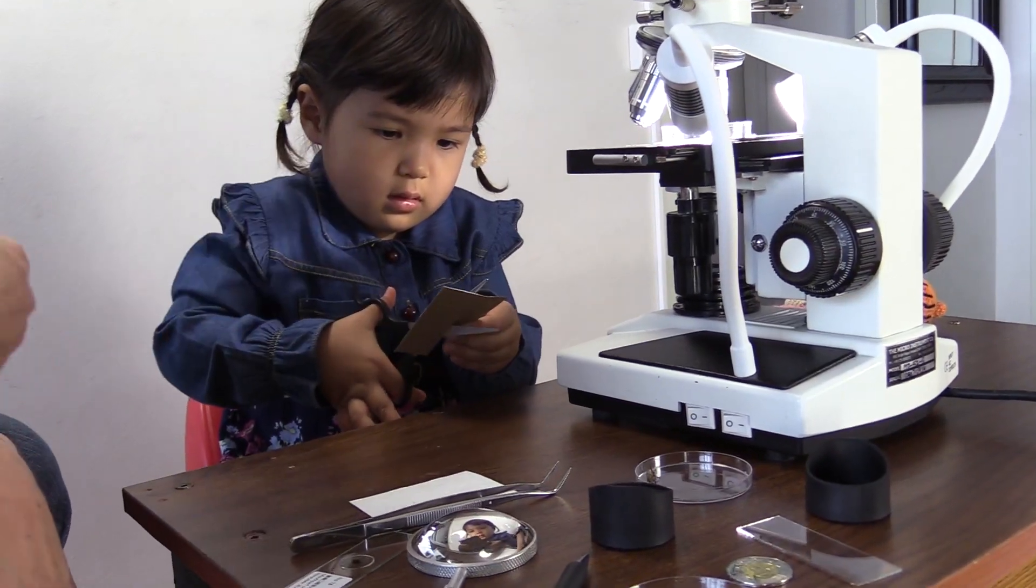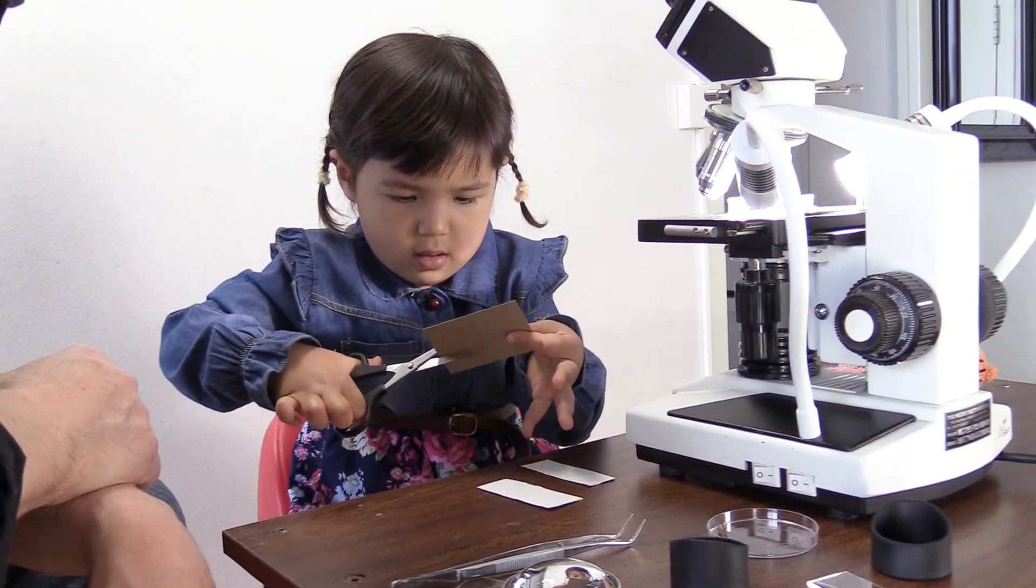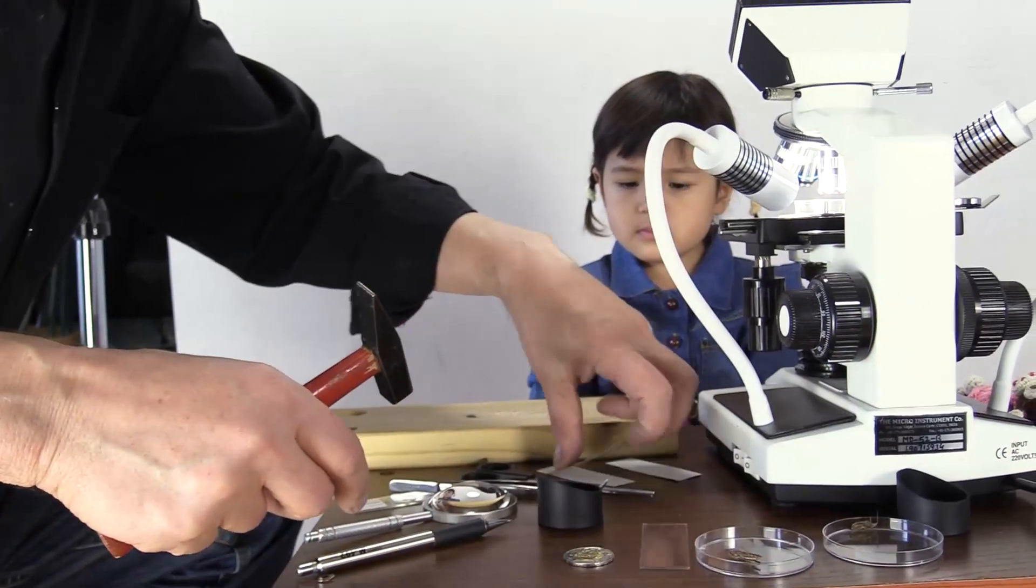Sketch several rectangles of the microscope slide size on a piece of cardboard from a cereal box, and have your child cut them with child scissors.